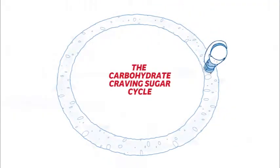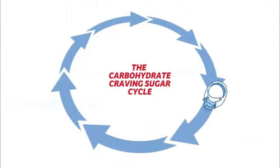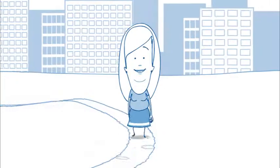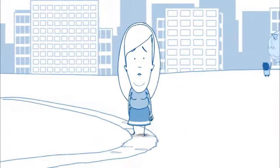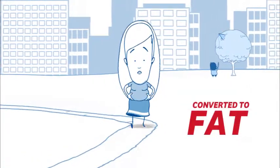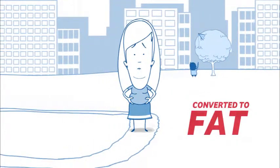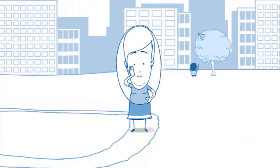This is what we call the carbohydrate-craving sugar cycle. And all the carbs that aren't used by the body for energy get converted to fat that doesn't go anywhere other than the places you don't want it to.